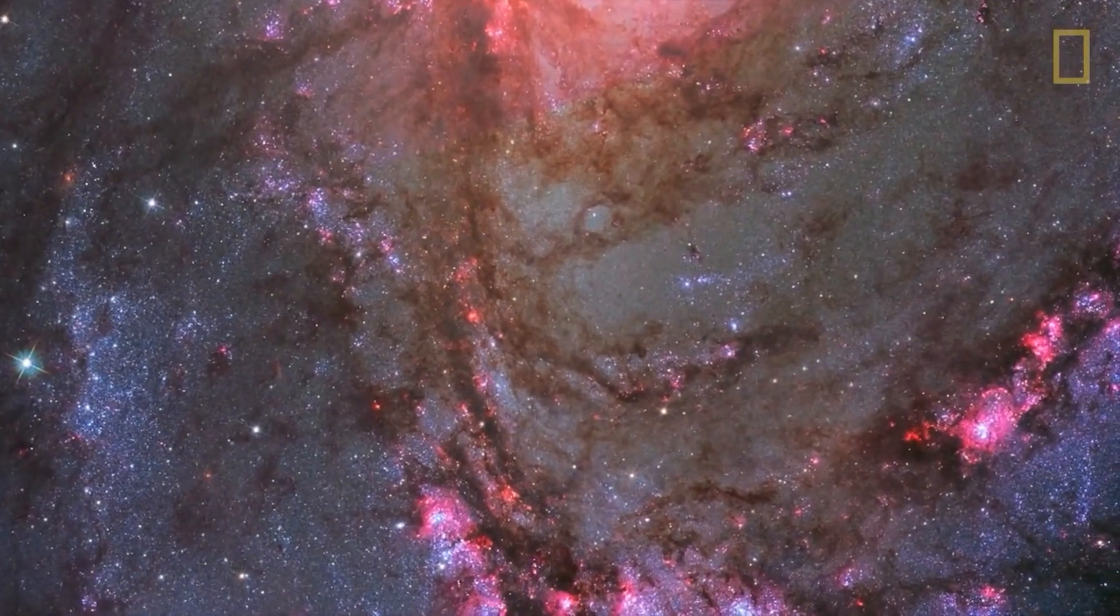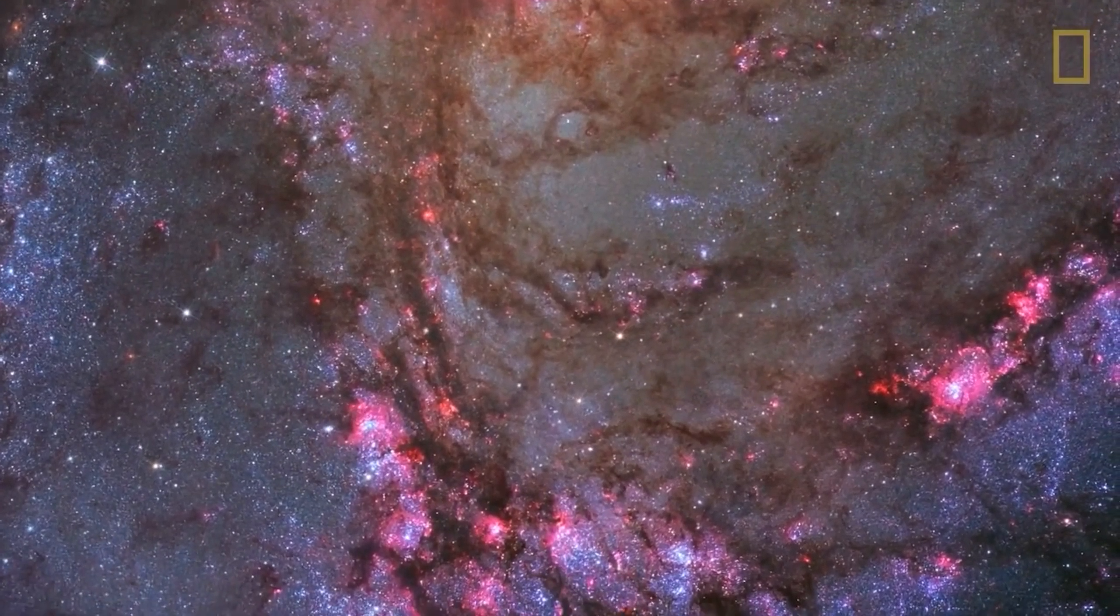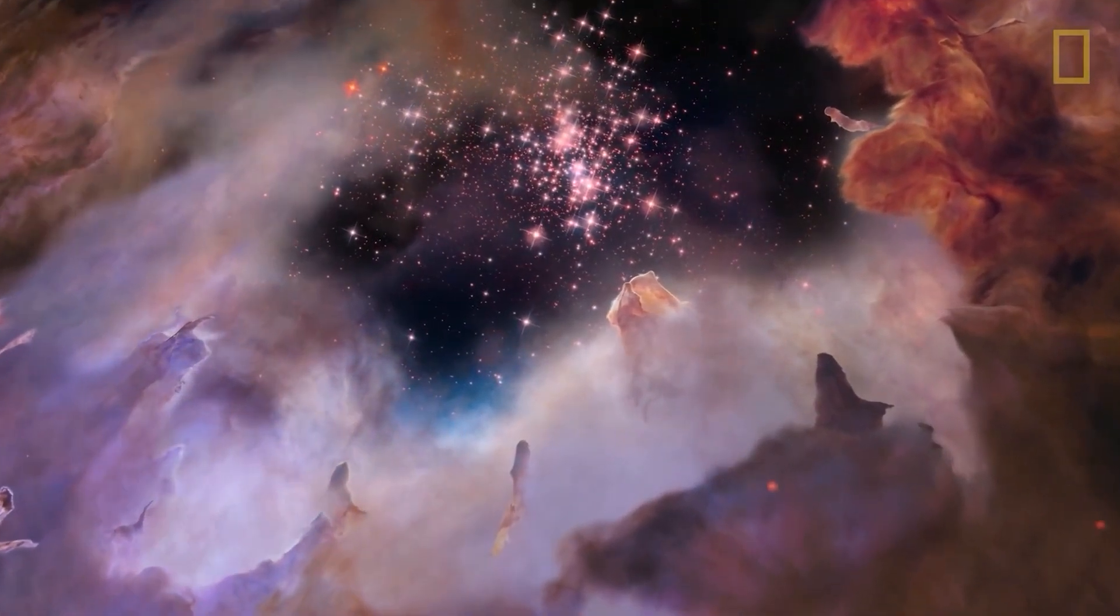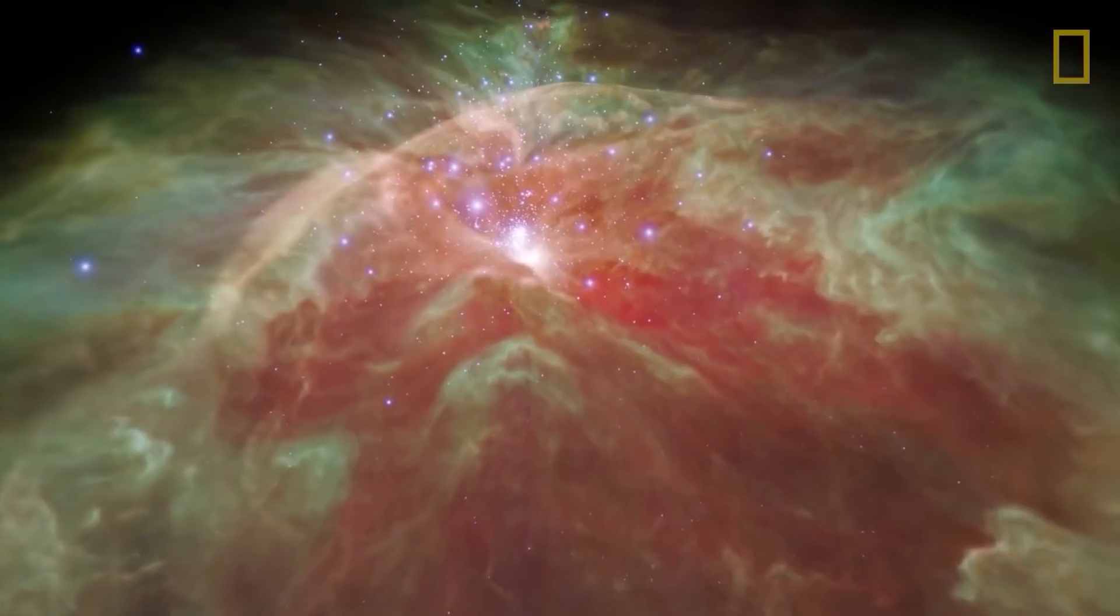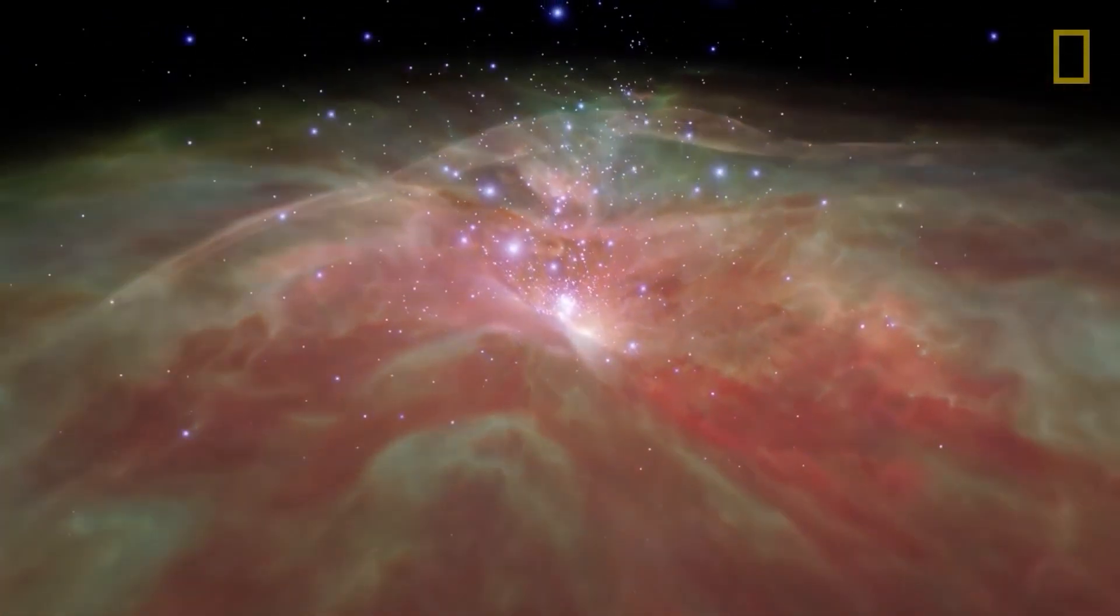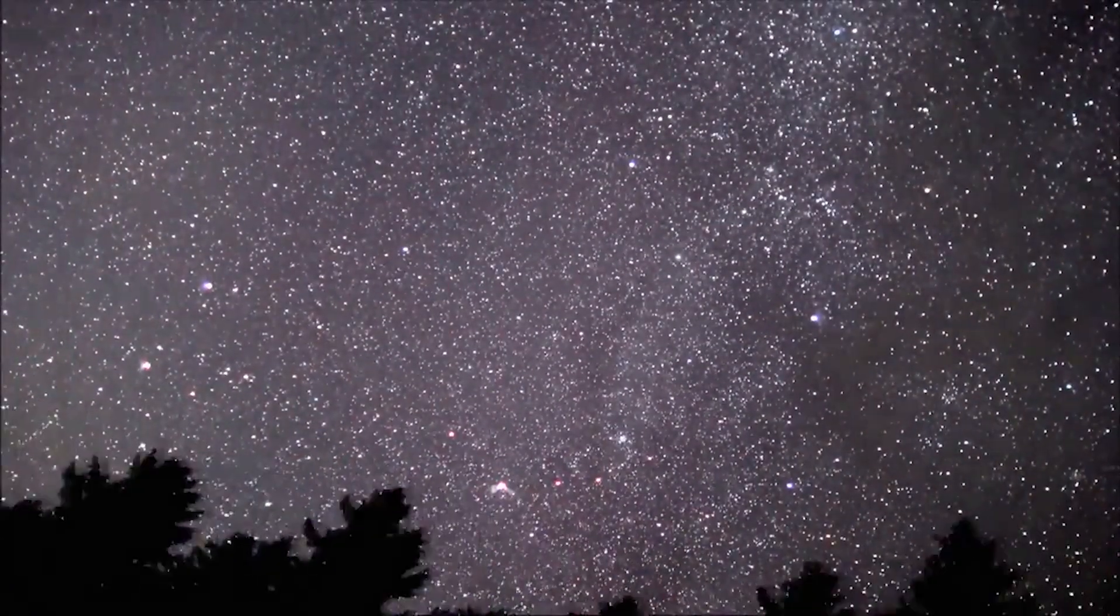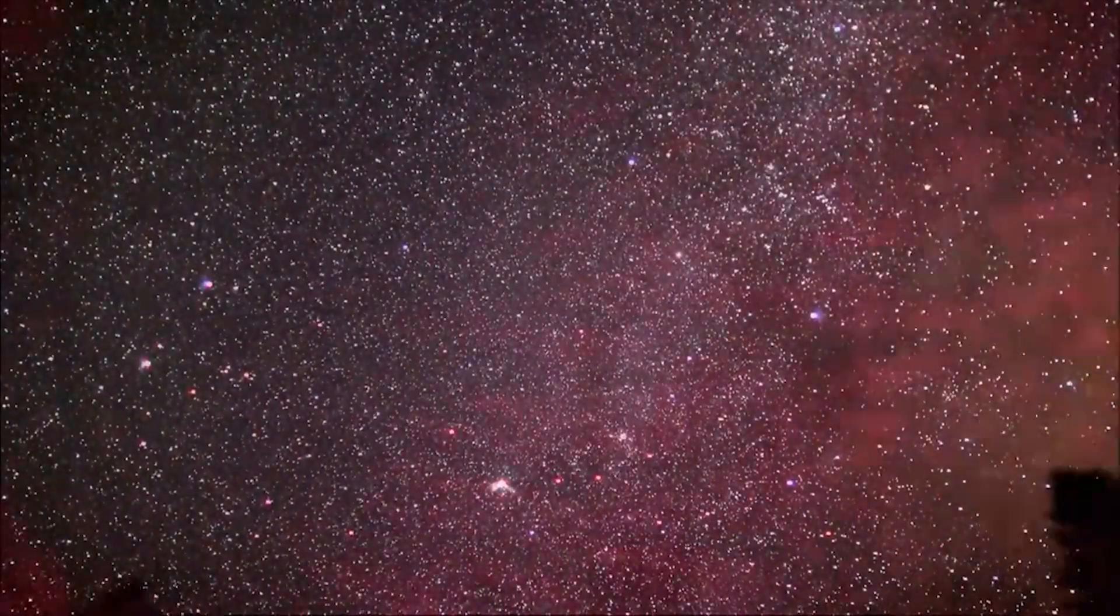The observable universe is only a small part of the entire universe, which encompasses everything that exists. The entire universe includes all matter, energy, space, and time, while the observable universe refers to what we can see from Earth. This slice is limited in size, approximately 93 billion light years across.